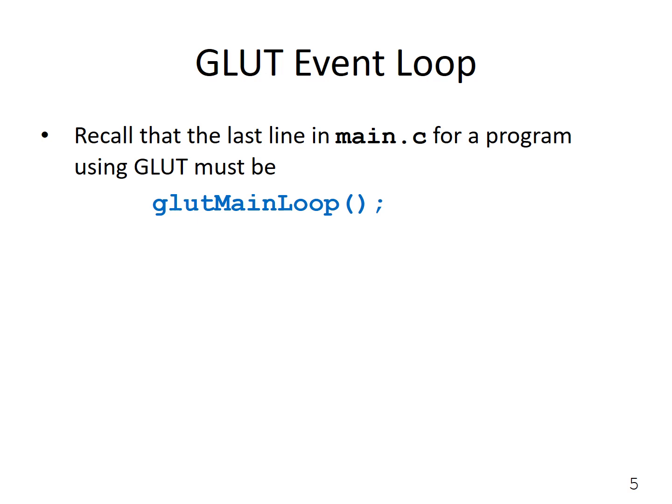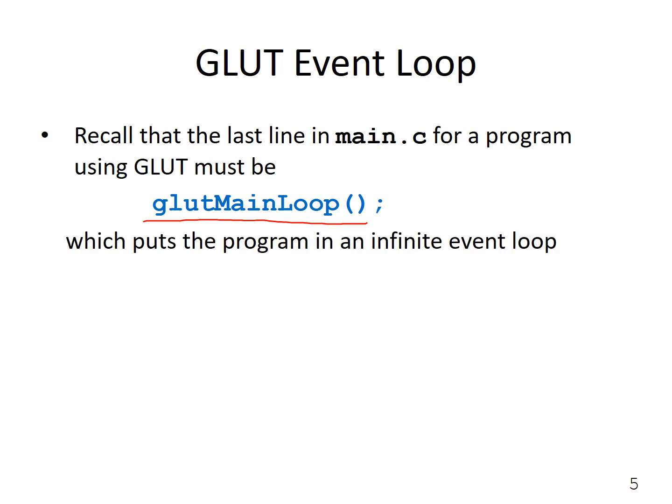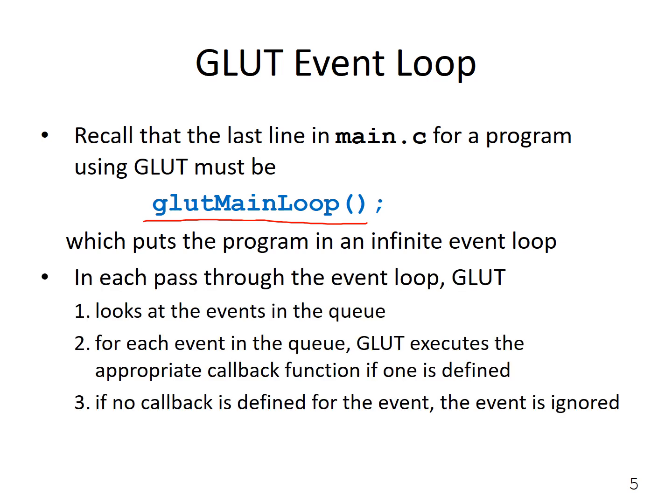Recall that the last line in main.cpp for a program using GLUT was GlutMainLoop, which puts the program in an infinite event loop. This means the program continuously checks the queue of events, and once it reaches the bottom of the queue it starts all over again. While checking the queue, if it finds any event that has occurred, it will execute the appropriate callback function if we have defined one. If we have not defined a callback function for a certain event, that event is simply ignored.